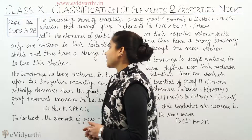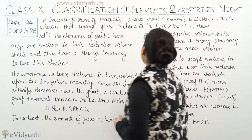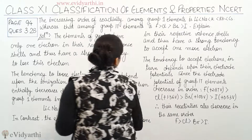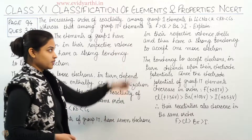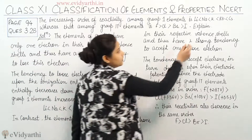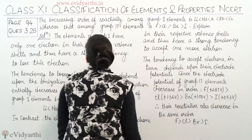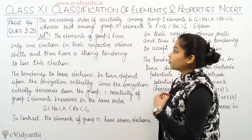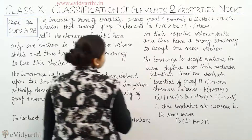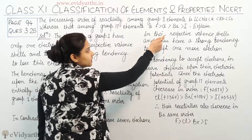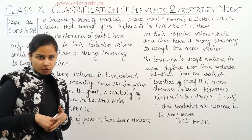The question is: the increasing order of reactivity among Group 1 elements is following a certain order, whereas that among Group 17 elements is following a different order. Then explain why it is so.